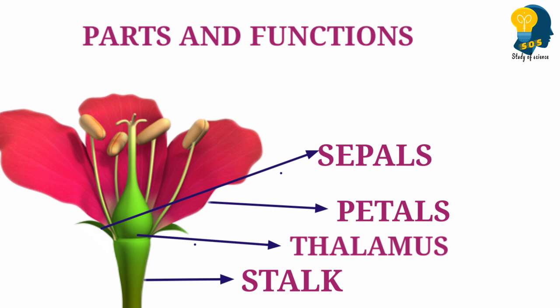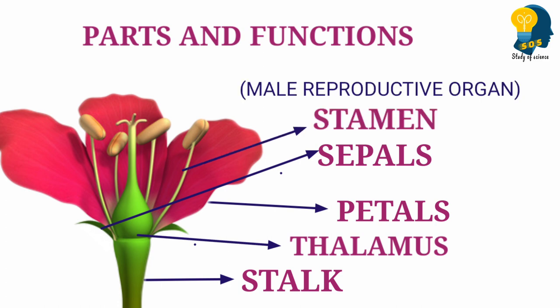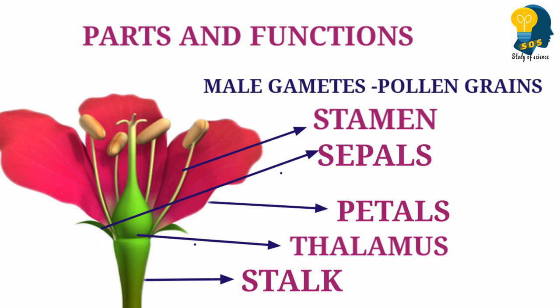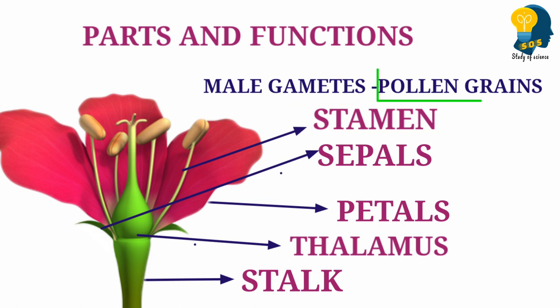Now, let us understand the next part of the flower, that is the stamen. The stamen is the male reproductive organ of the flower. If you look at the stamen here, you can observe the green tube-like structure with the yellow color at the top. These stamens produce the male gametes, which are the sex cells. In plants, the male gametes are called as pollen grains. Male gametes are present in the stamen and are called as pollen grains.